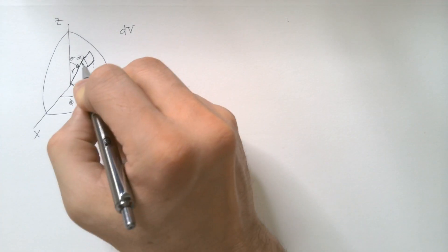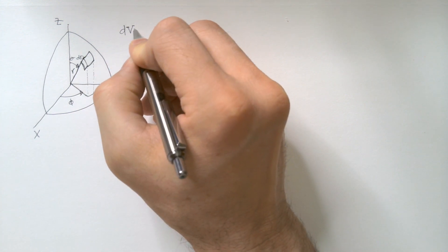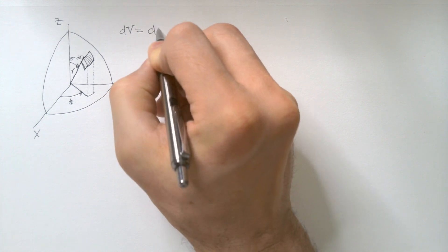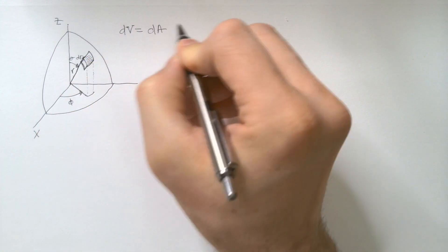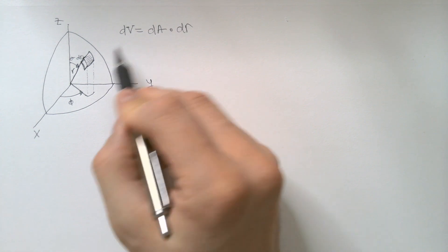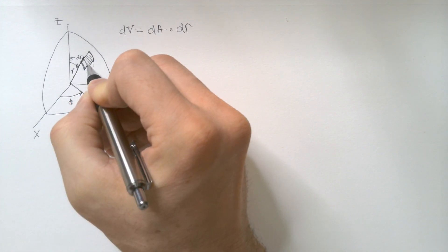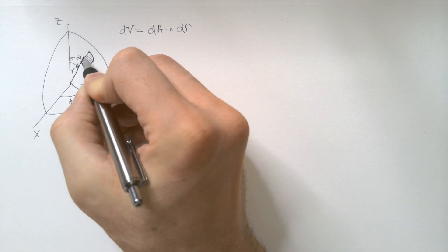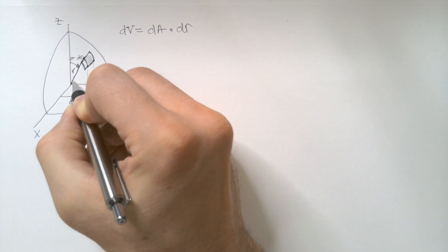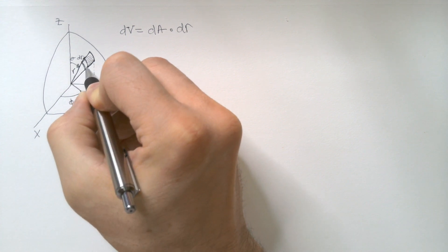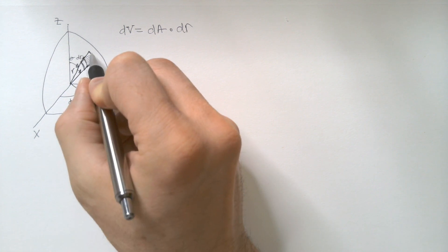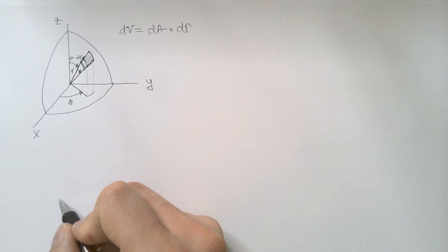Well, we see from this figure that dv will be this area dA times this depth dr. But what is this area dA? Because the area is very small, I can assume this is a square. This over here, you will see is simply this increment dθ times radius r.